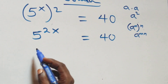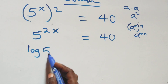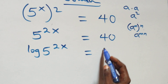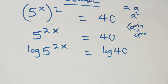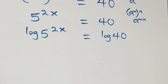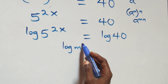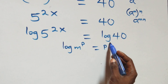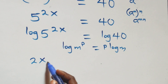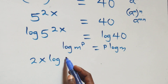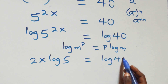The next step: we take the log on both sides. We have log of 5 raised to power 2x equals log 40. Then we apply the power rule of logarithm: when we have log m raised to power p, this is the same thing as p·log m. So here this becomes 2x·log 5 equals log 40.